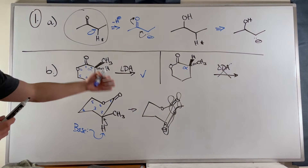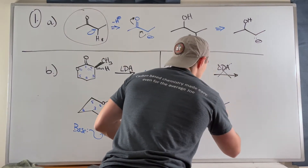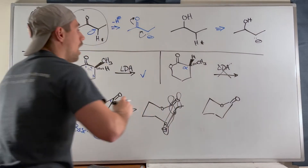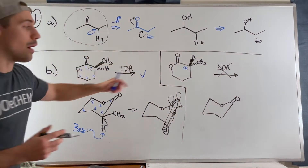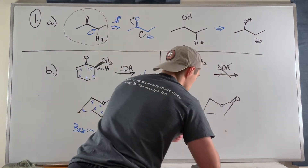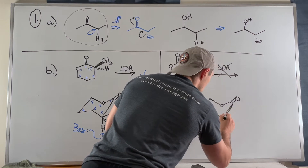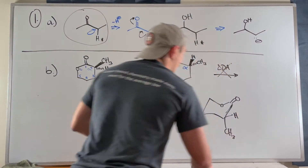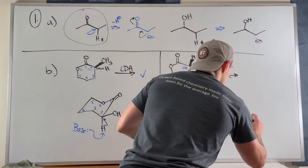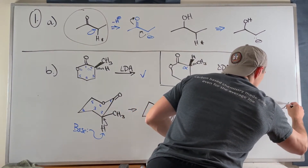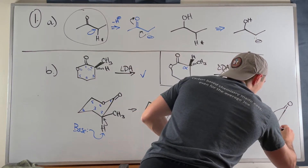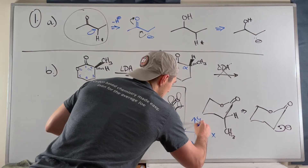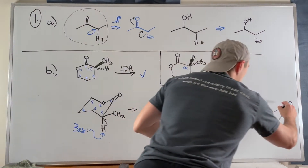It'll be more apparent when I show the conjugate base of what's going on in the second case. Instead of the methyl group being up, we have the methyl group down — down is axial. So the methyl group is axial, which means the hydrogen we'd use for alpha deprotonation is equatorial. If I draw the conjugate base, the electrons are kind of in an xy-plane — on the x-axis.